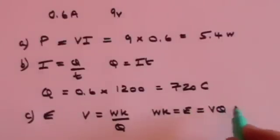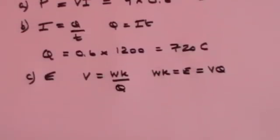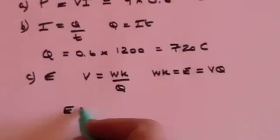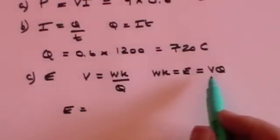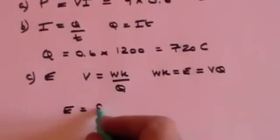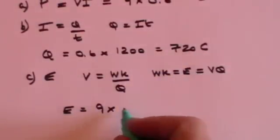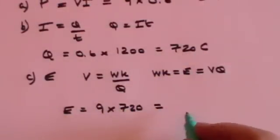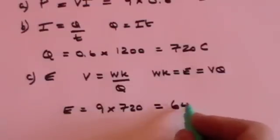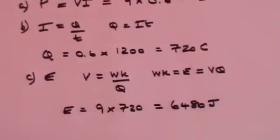So that means that the energy which is what we want is the voltage which of course was 9 volts, it was a 9 volt battery, times the charge which was 720 coulombs. So 9 times 720 I think comes to 6480 and the unit is joules.